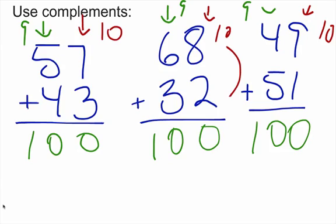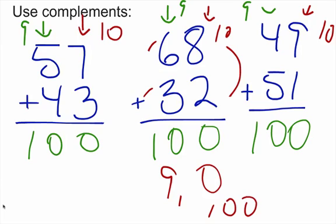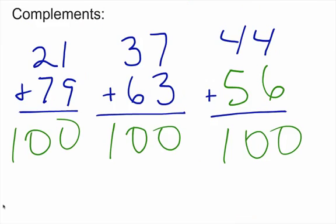If we do this one the old-fashioned way: 6 plus 3 is 9, and 8 plus 2 is 10. And if you watch my other video on addition, you'll know that we just add that 1 to the 9 and get our 10. The idea is that the ones on the left are going to equal 9, and the ones on the right will equal 10.